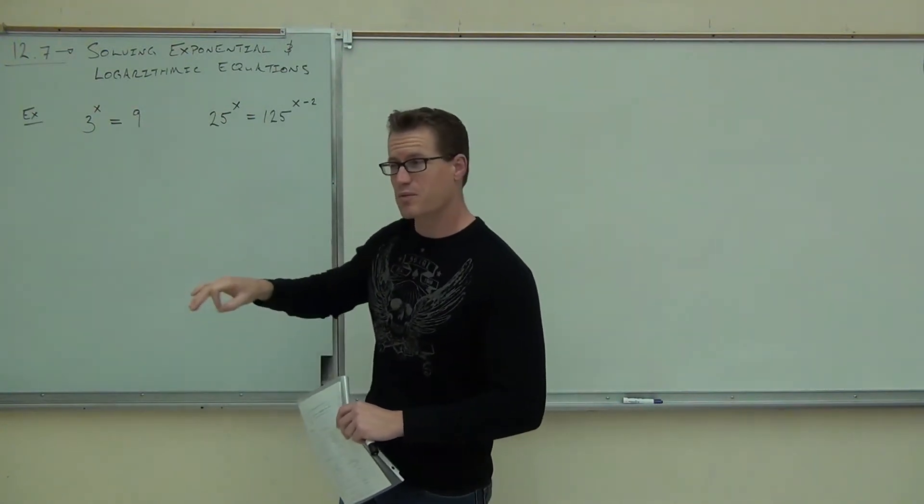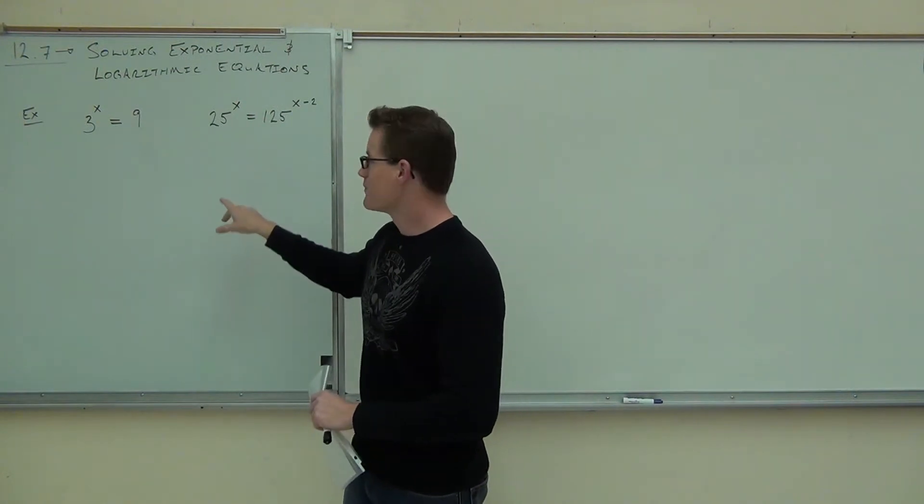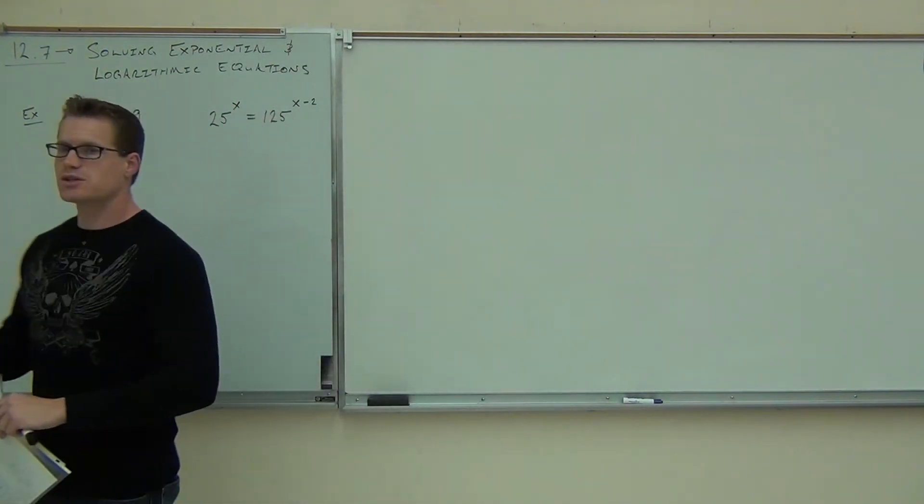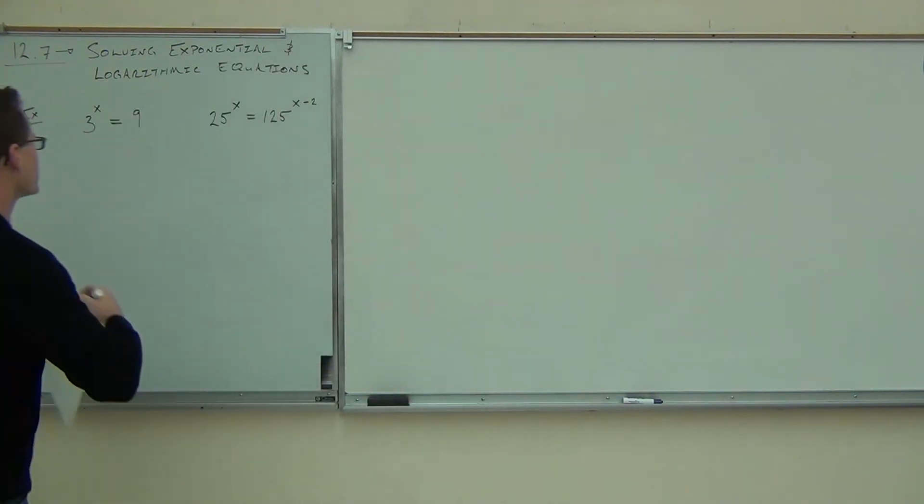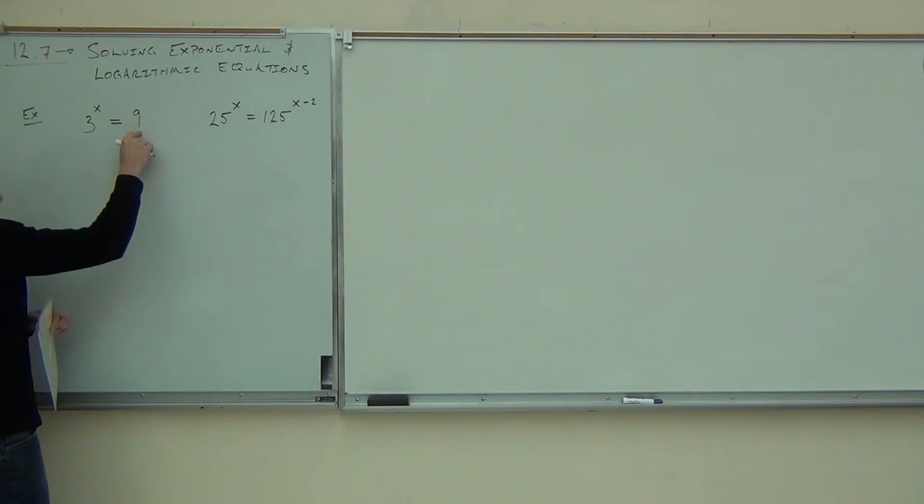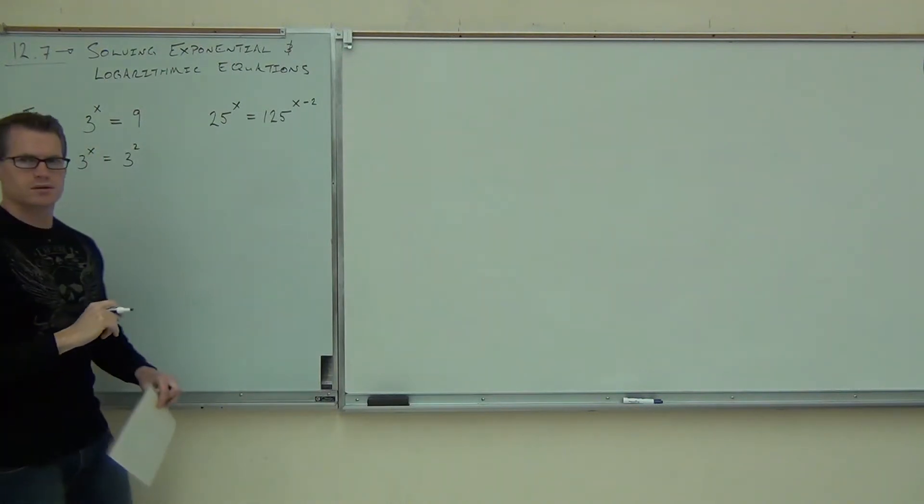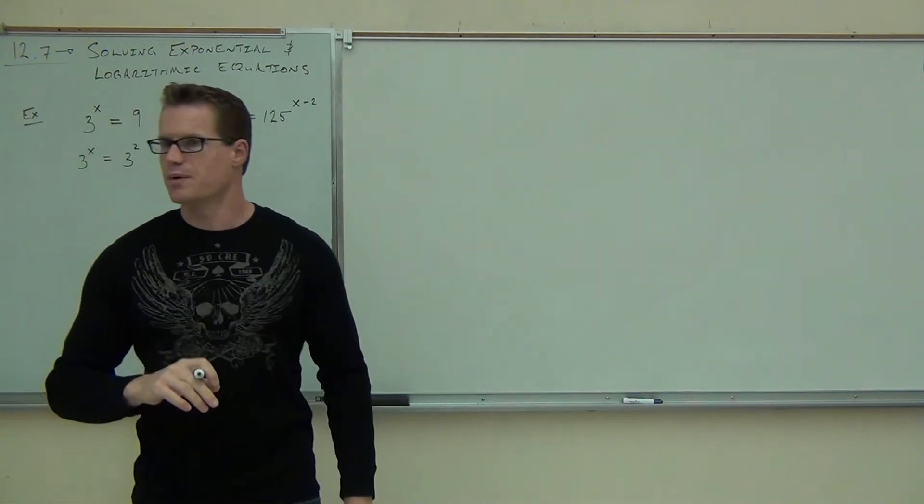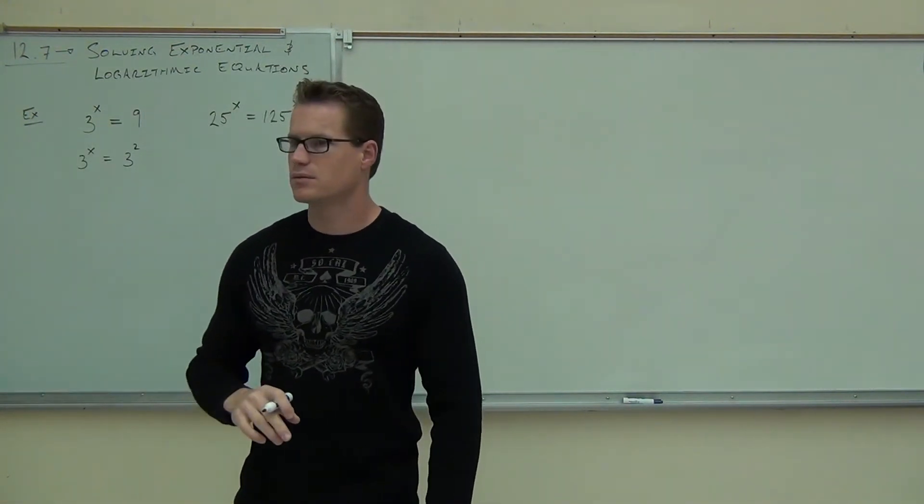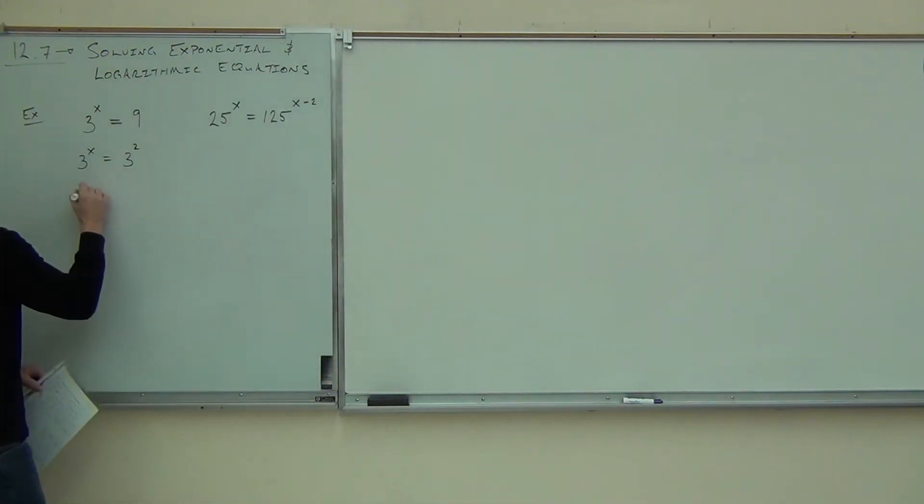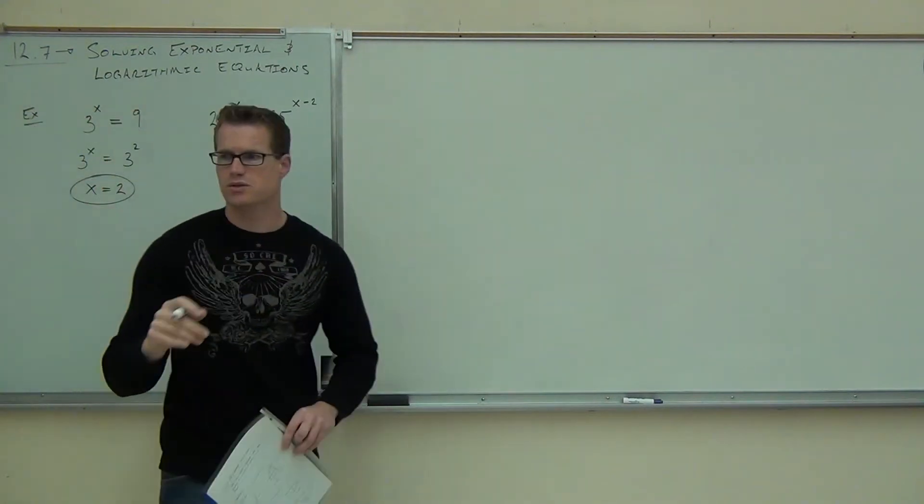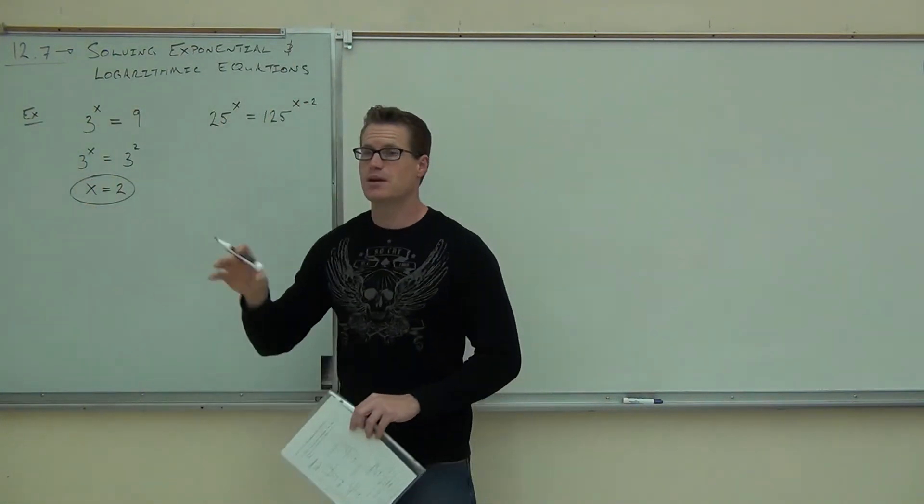These should look really familiar to you. If you think about these, the idea is you're going to try to get common bases. Do you remember getting common bases? I know that if this is 3 to the x and this is 9, I should write this as 3 to the x and 3 squared, because that's still equal to 9. And then how much is x? Yeah, we understood that if our bases are the same, our exponents are equal, and we can solve exponentials like that if we can find common bases.